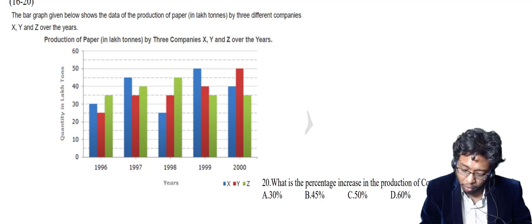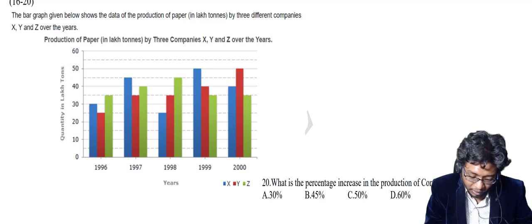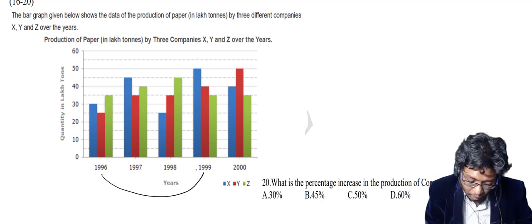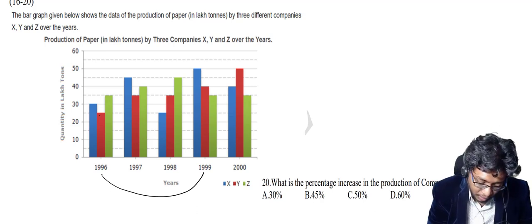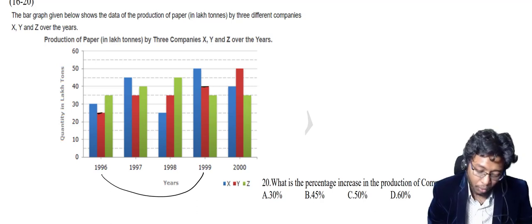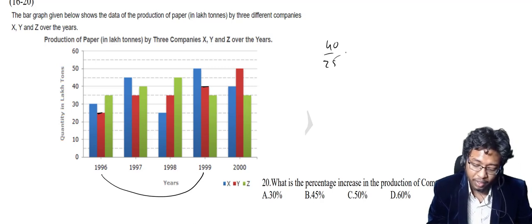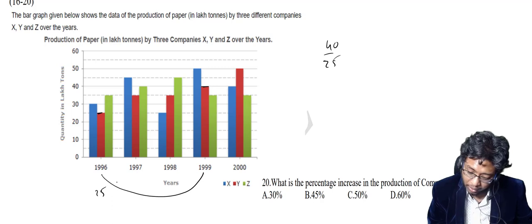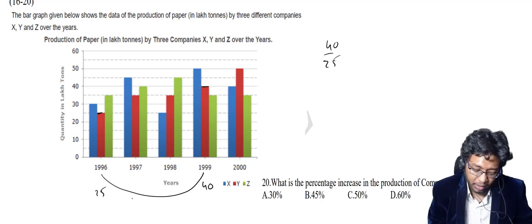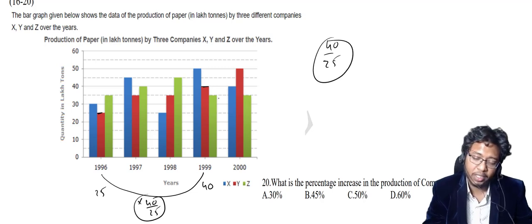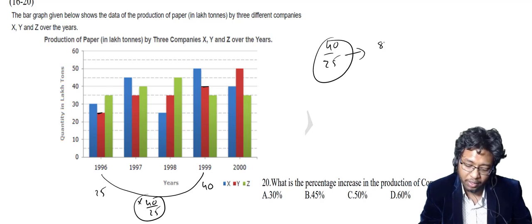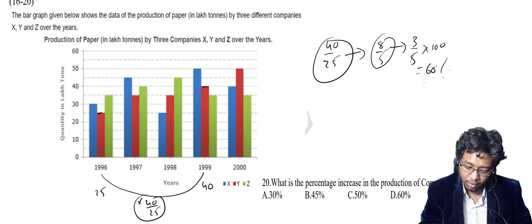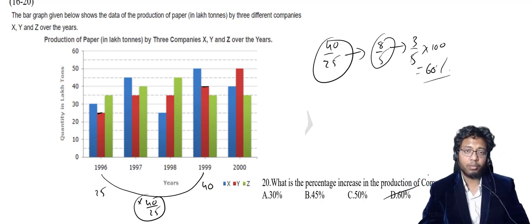What is the percentage increase in the production of company Y from 1996 to 1999? Check the red color bar: this is 25 in 1996 and 40 in 1999. Directly write the multiplication factor as 40 by 25. Simplify by dividing by 5: this gives 8 by 5, so the increase is 3 by 5 into 100 = 60%. The answer is D. I hope this is helpful. Thank you.